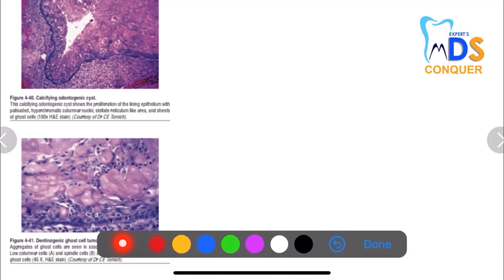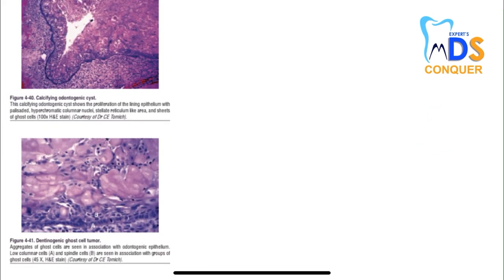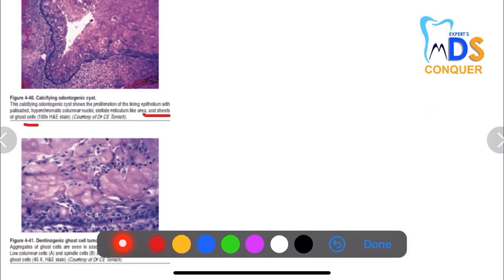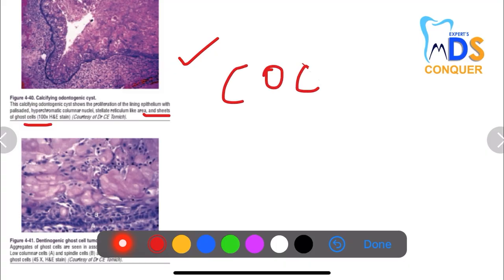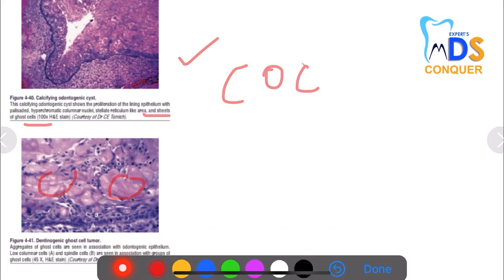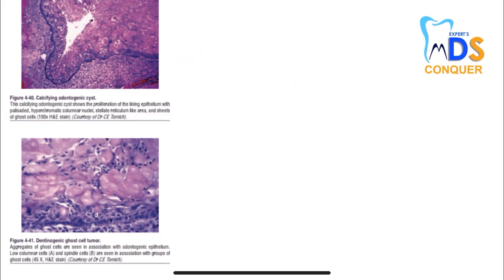Next, the COC (calcifying odontogenic cyst), where you can see sheets of ghost cells. The lining epithelium is palisaded with hypochromatic columnar nuclei and a stellate reticulum-like area, with sheets of ghost cells. With the dentinogenic ghost cell tumor, there are aggregates of ghost cells in association with odontogenic epithelium, as seen in the picture.